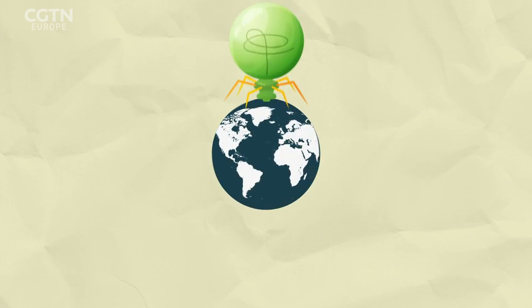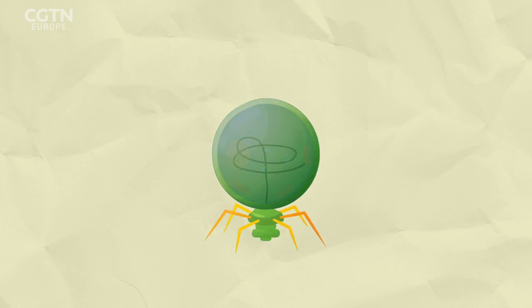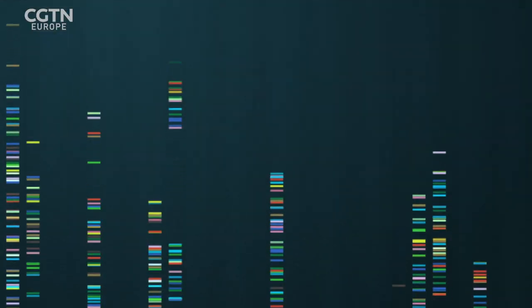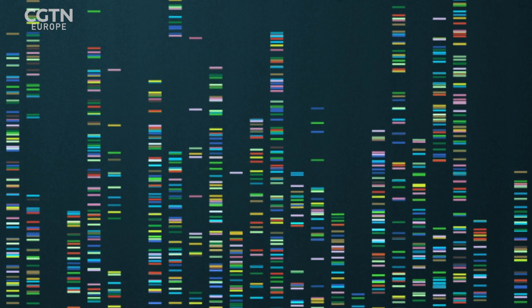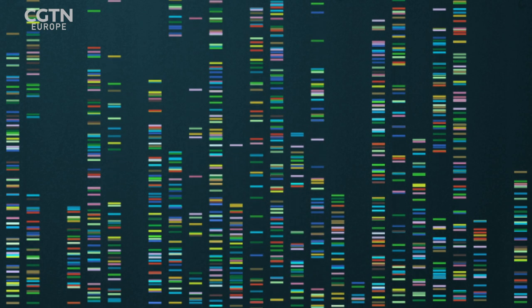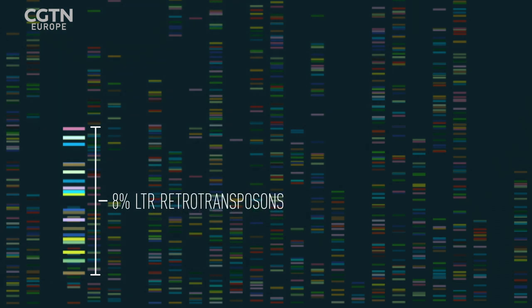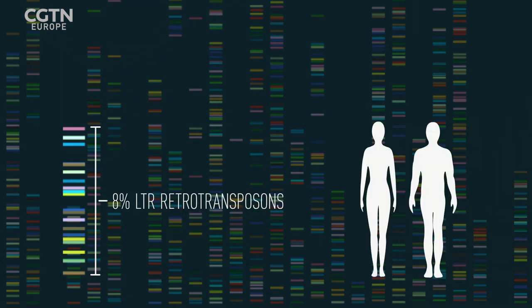All living things can be infected by viruses. They hijack cells, insert their genetic payload, and try to replicate. In some cases, this can permanently alter the DNA of the species they have infected. A study of the human genome found that approximately 8% is LTR retrotransposons — the remnants of viruses in our DNA that were passed down to us before we were Homo sapiens.